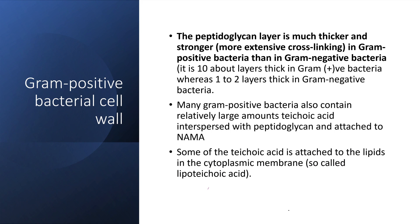Gram positive bacteria also have some other features. While not directly relevant to the gram stain, for completeness: they contain a large amount of teichoic acid, which is present only in gram positive bacteria. It is interspersed around the peptidoglycan layers and attached to the N-acetylmuramic acid of the peptidoglycan backbone. Teichoic acid is a polymer of ribitol phosphate. There is also lipoteichoic acid, a polymer of glycerol phosphate that is attached to the cytoplasmic membrane. Both teichoic acid and lipoteichoic acid also make the bacterial cell wall stronger and more rigid.